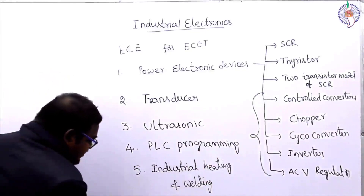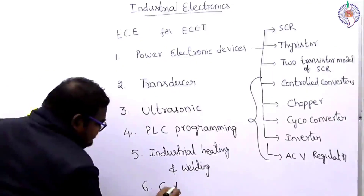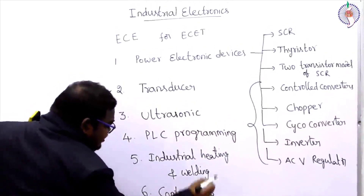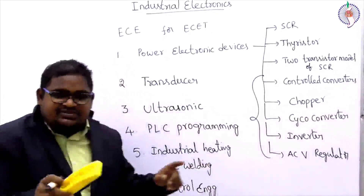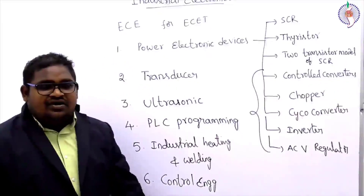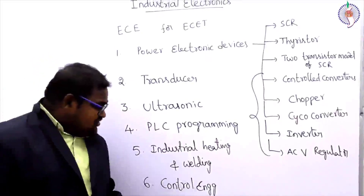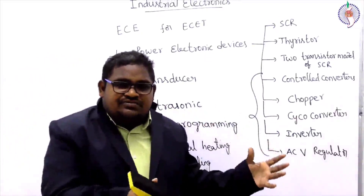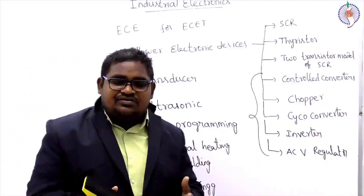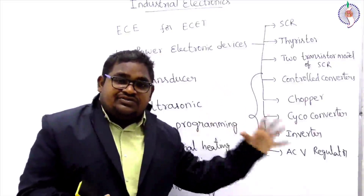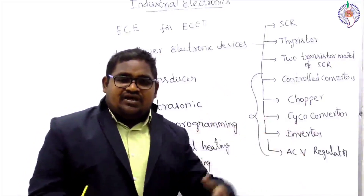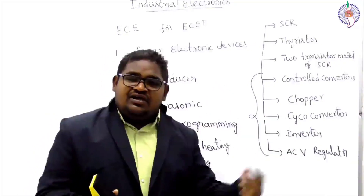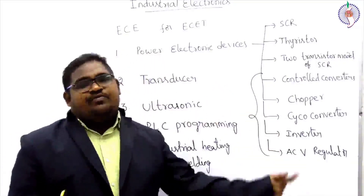At last, we will see about control engineering. Control engineering - what is a system, and what do you mean by control system. What about the open loop control system and the closed loop control system. What is the transfer function of this system, and how we can find the open loop transfer function from the closed loop transfer function, and how we can find the closed loop transfer function from the open loop transfer function.